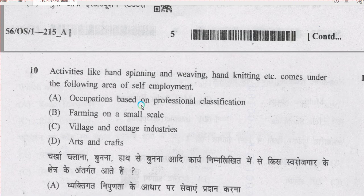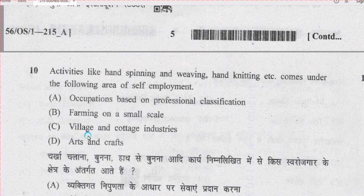Question number 10: activities like hand spinning and weaving, hand knitting, etc. come under a defaulting area of self-employment. The correct option is option C, village and cottage industries.